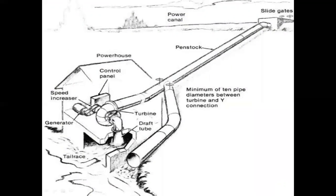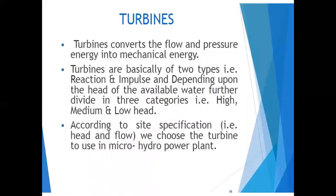The turbine converts the flow and pressure energy into mechanical energy. Turbines are of two types: reaction and impulse turbines, and depending on the available head of water, they are further divided into high, medium, and low head categories — Pelton, Francis, and Kaplan turbines. Normally we use a Pelton turbine because the head is typically high.